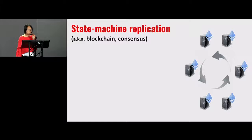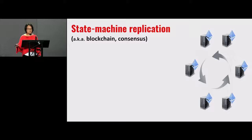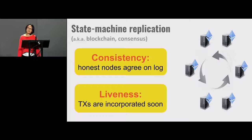I'll begin by defining the problem we're trying to solve. Behind all cryptocurrency systems, we have a core protocol called the blockchain protocol, also called state machine replication and BFT consensus. In state machine replication, we have a distributed system of nodes that want to agree on a linear log of transactions. We care about two important security properties: consistency and liveness. Consistency says all honest nodes must agree on the same log. Liveness says whenever I want to buy coffee, my transaction gets incorporated into honest nodes' logs very quickly.